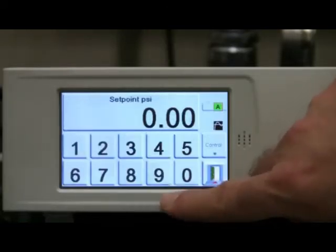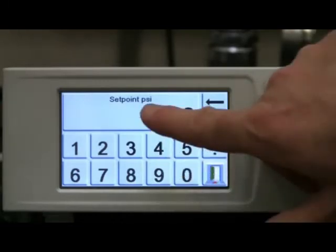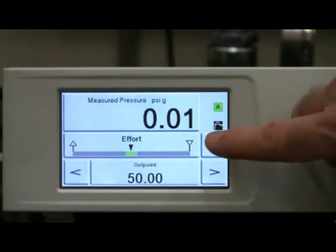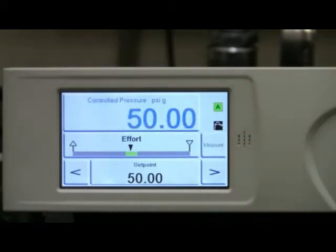Next, we will enter 50 psi as the first set point pressure using the numeric keypad, and then select control to change the PACE 5000 from measure mode to control mode. Notice how fast the PACE 5000 control to 50 psi. Once the set point is achieved within user defined limits, the color of the pressure display will change from blue to green, providing immediate feedback to the operator that the reading from the device center test can now be recorded.